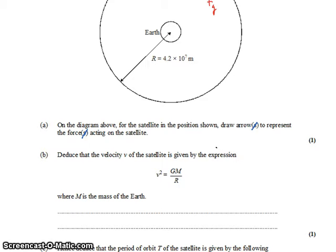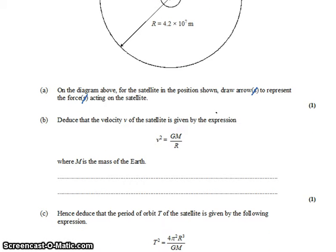Part B says, deduce that the velocity of the satellite at that orbit is given by this expression. So basically we have to derive this expression, where capital M is the mass of the Earth, R is the radius of the satellite's orbit. This kind of question is pretty common, or at least the skills in it show up a lot.